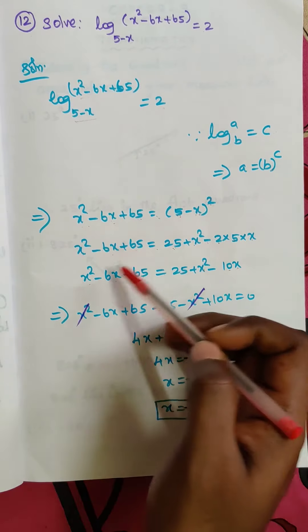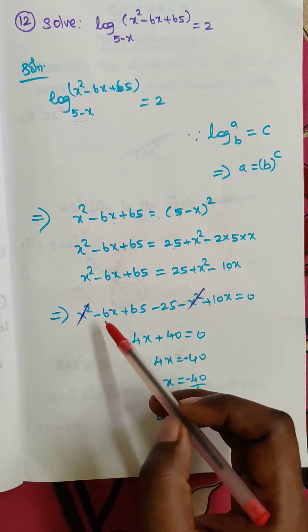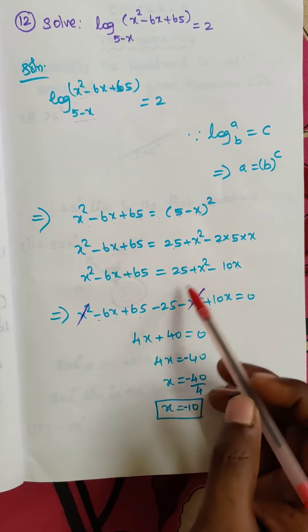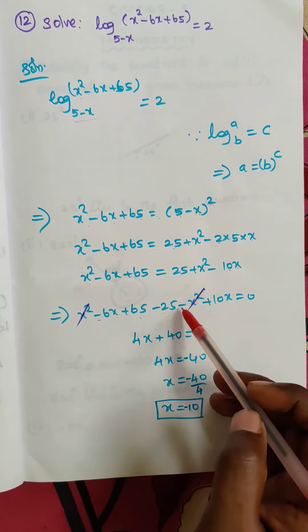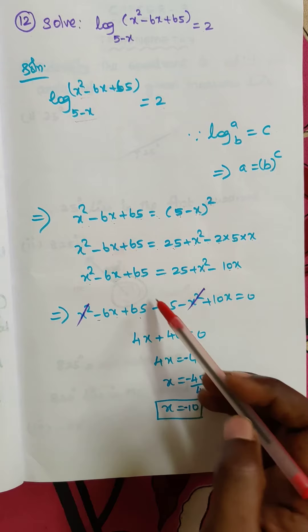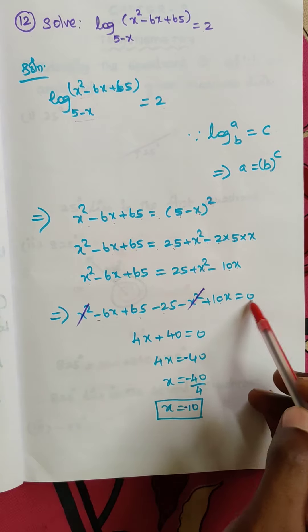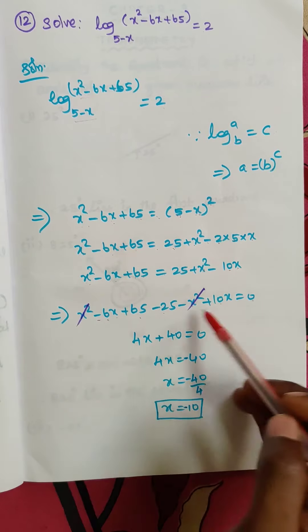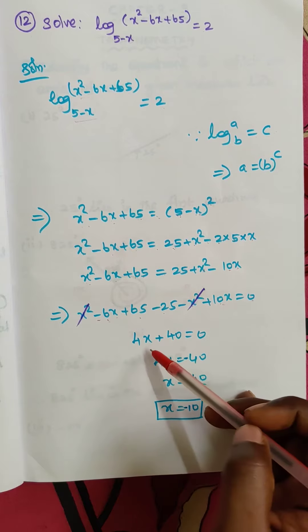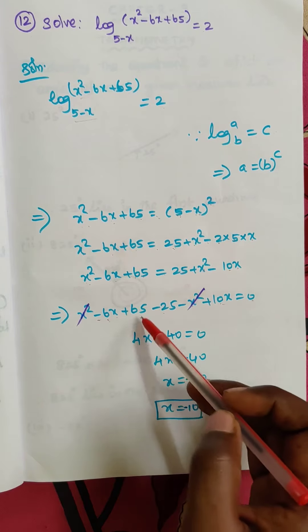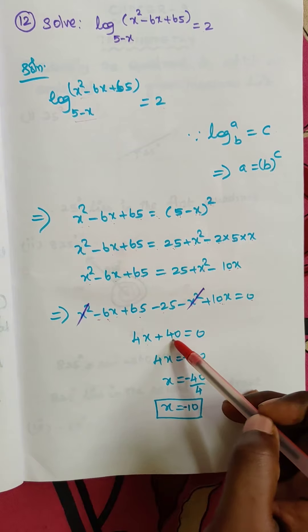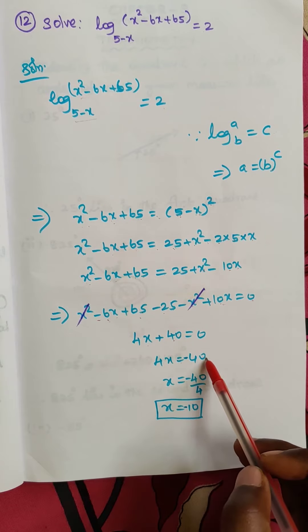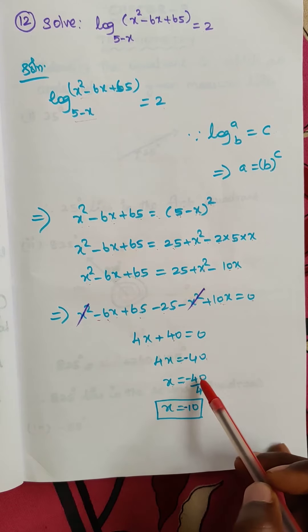Now I am going to take all the values to the left-hand side: x² - 6x + 65 - 25 - x² + 10x = 0. Here x² and -x² get cancelled. Then -6x + 10x = 4x, and 65 - 25 = 40. So 4x + 40 = 0, giving 4x = -40, therefore x = -10.